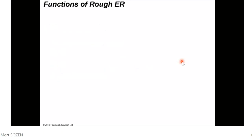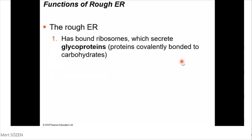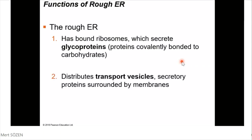The other kind is rough endoplasmic reticulum, which has bound ribosomes. Those ribosomes secrete glycoproteins — proteins covalently bound to carbohydrates. The rough ER distributes transport vesicles, which are secretory proteins surrounded by membranes. The rough endoplasmic reticulum is also a membrane factory for the cell, meaning the other membrane structures of the cell are produced by the rough endoplasmic reticulum.